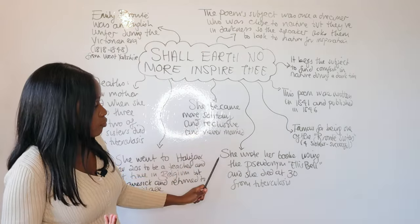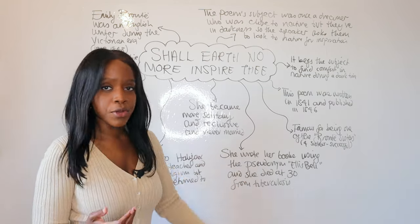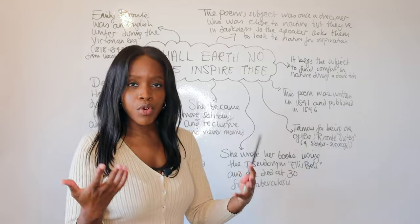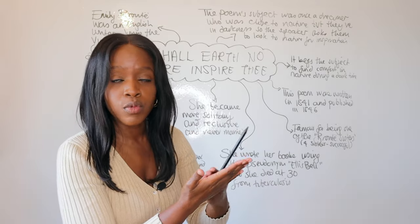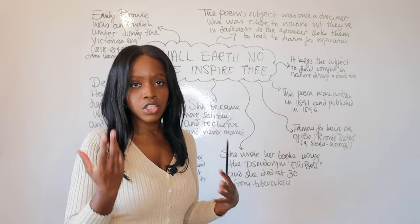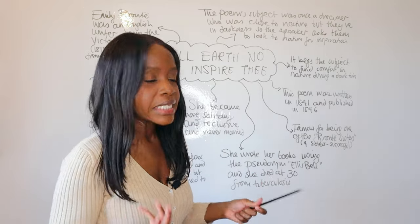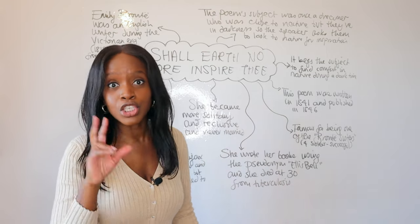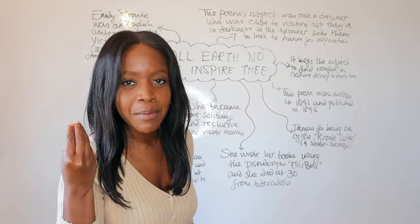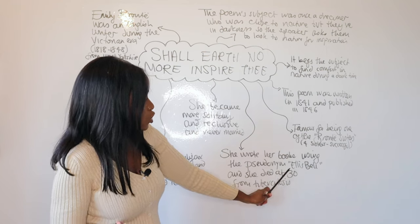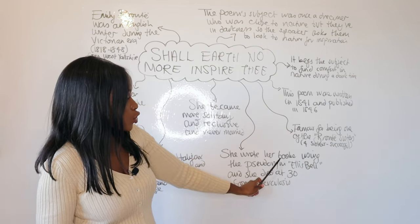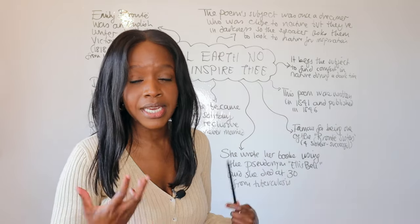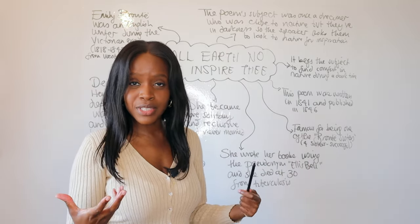Emily Brontë wrote her books during this time. It was a very sexist society — women who wrote books and clearly identified themselves as women would find that lots of people wouldn't read their work. So Emily Brontë, knowing this, decided to use a pseudonym when she wrote and published her books. She used the pseudonym Ellis Bell for all her published works. And as mentioned, Emily Brontë herself was no stranger to tuberculosis.